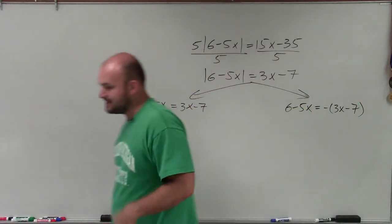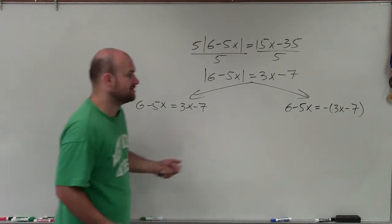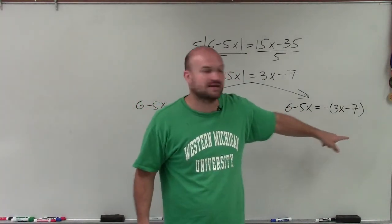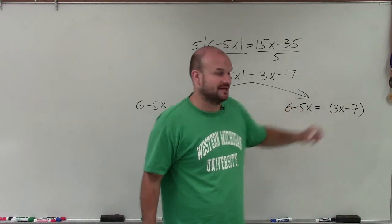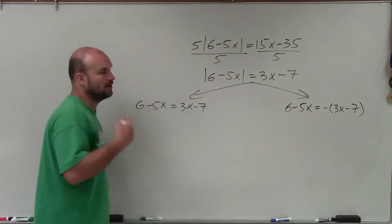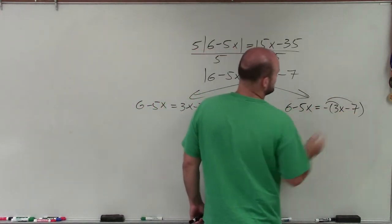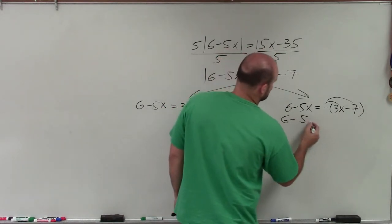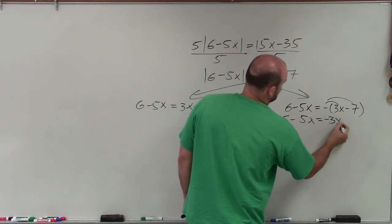Now, notice when I made that negative, I used parentheses, right? Because you're not just making the 3 negative. You're making both of them negative. So therefore, I need to put parentheses around it and apply this distributive property. So actually, let's solve this one first, since we're kind of on a roll with it.